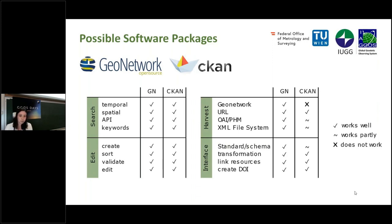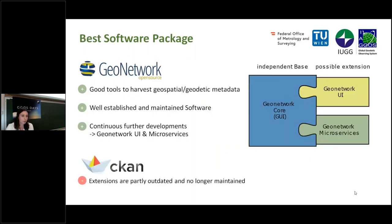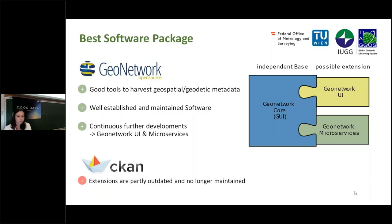Based on this research, we have put the focus on GeoNetwork and have done most of the tests in this software. One big advantage of GeoNetwork is that there are a lot of built-in functions to harvest geospatial metadata, and the software is very well established and maintained. There are also continuous further developments, like the two extension packages GeoNetwork UI and Microservices, which offer a good opportunity to improve the functionalities in the base package GeoNetwork Core, which also runs independently.